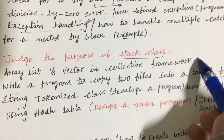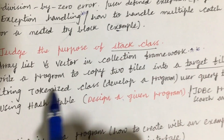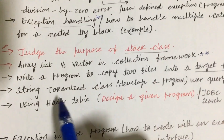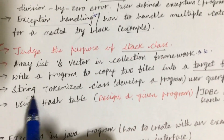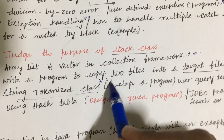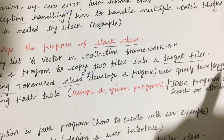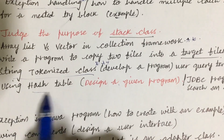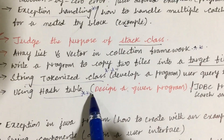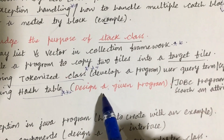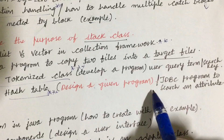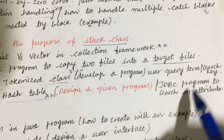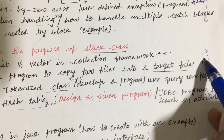The fourth unit covers: the purpose of Stack classes, ArrayList versus Vector differences in the collection framework, and write a program to copy two files into a target file. StringTokenizer class is a key question. Develop a program for a user query term as well as search key using Hashtable — this is a very important, top-highlighted question.